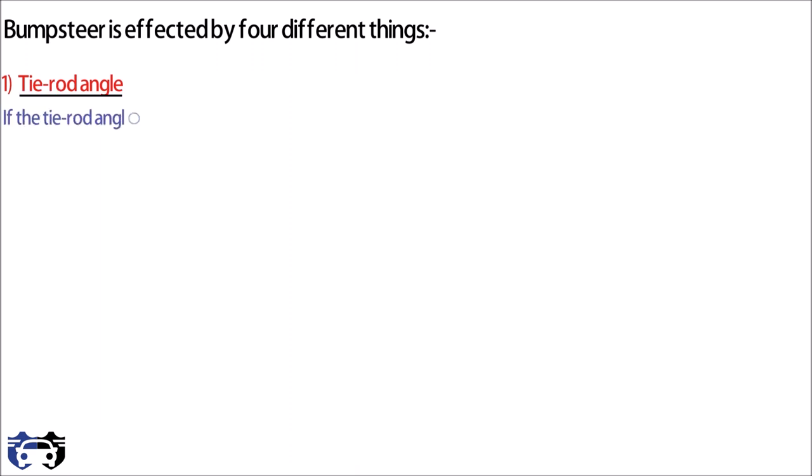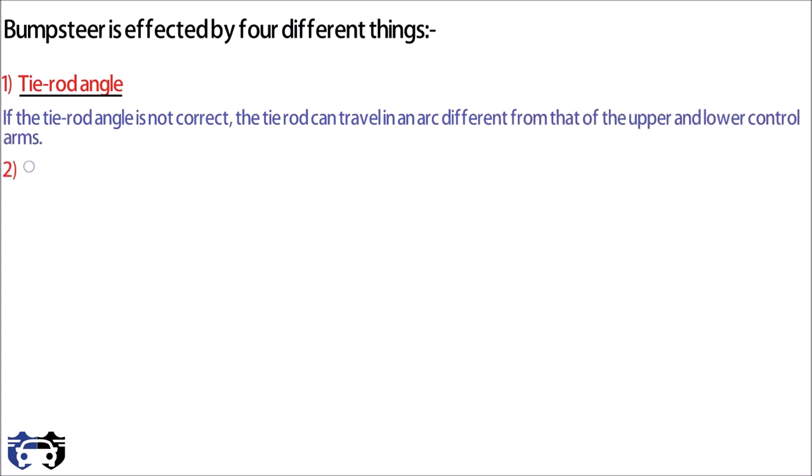If the tie rod angle is not correct, the tie rod can travel in an arc different from the upper and lower control arm arc and this will cause bump steer. Second is the tie rod length. If tie rod is too short, it will have more severe arc, and if it is too long, it can have the opposite effect, basically not forming an arc, causing toe-in condition.